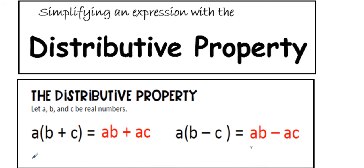All right, let's go over the distributive property. The distributive property states that A times the quantity B plus C equals AB plus AC. A times the quantity B minus C equals AB minus AC.